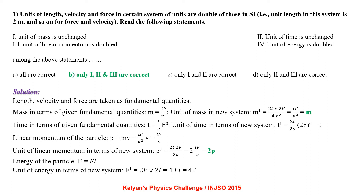By taking length, velocity and force as fundamental quantities, we can write mass in terms of these fundamental quantities as M equal to LF by V squared. The unit of mass in the new system, M dash, equals 2L times 2F divided by 4V squared, which equals LF by V squared, equal to M. This indicates that the unit of mass is not changed.